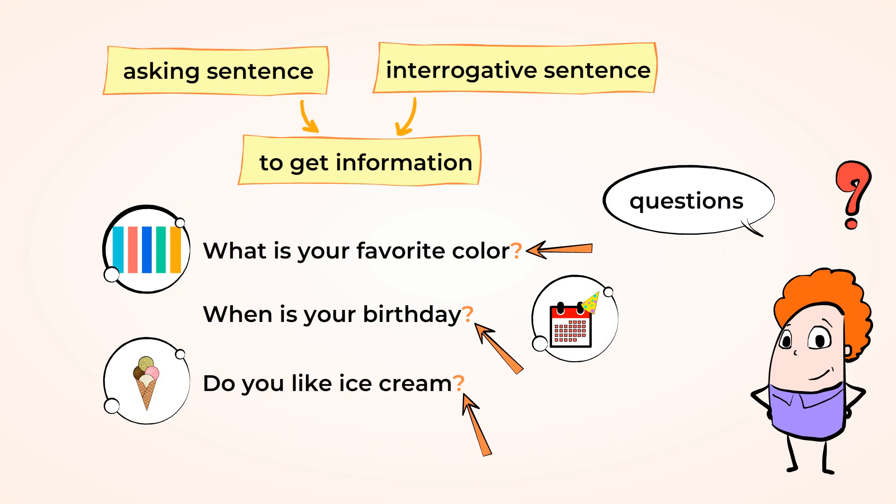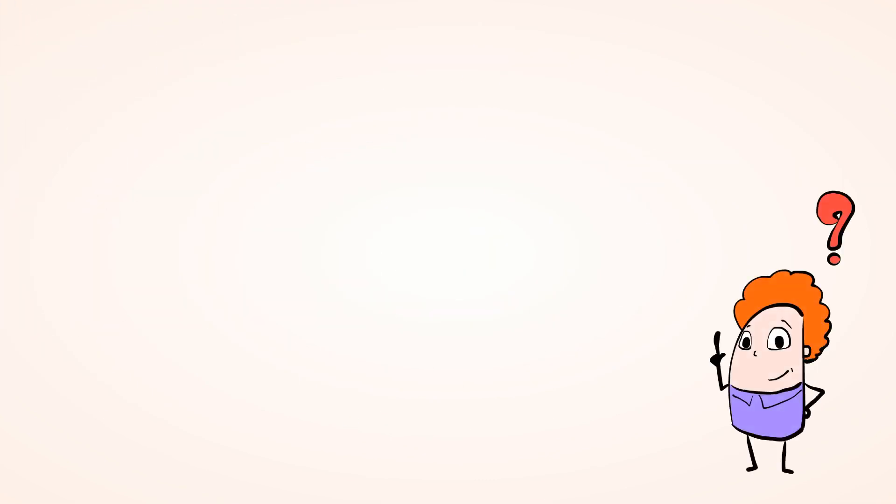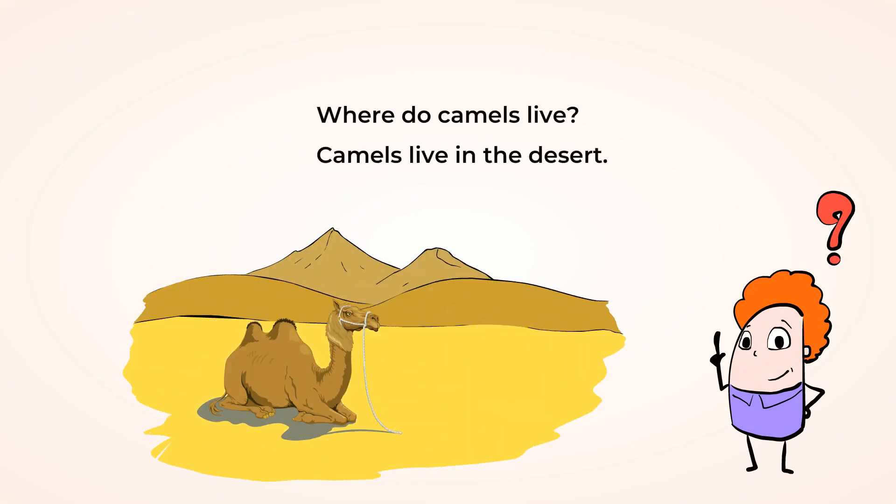Now let's pause for a quick check. Which one of these is a telling sentence? Where do camels live? Camels live in the desert.